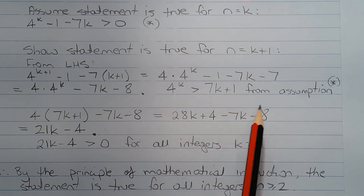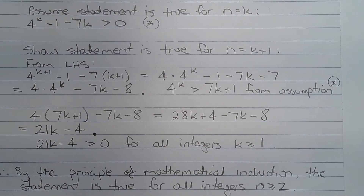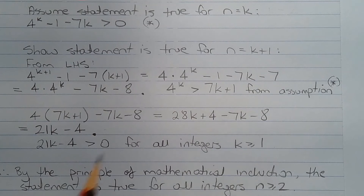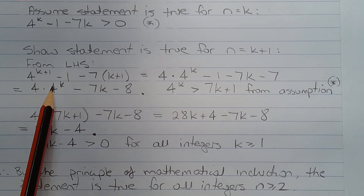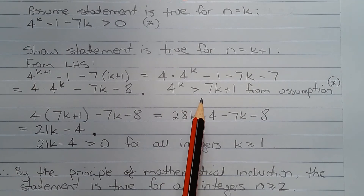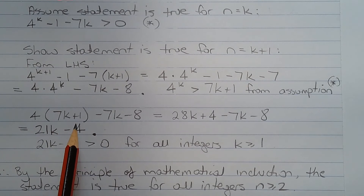From the assumption we can rearrange and make 4 to the power of k the subject, so 4 to the power of k is greater than 7k plus 1. We replace 4 to the power of k with 7k plus 1, knowing that 4 to the power of k is greater than 7k plus 1. So we have 4 times 7k plus 1 minus 7k minus 8.